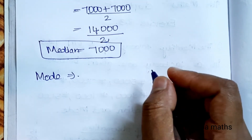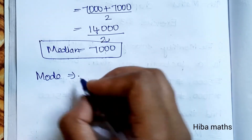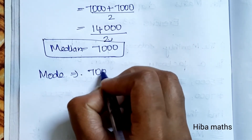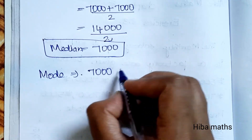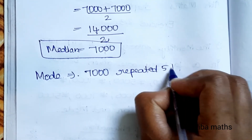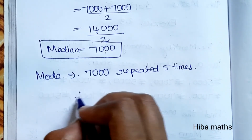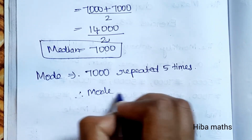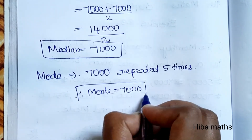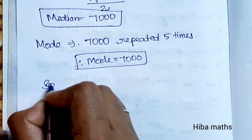Mode is equal to the most repeated number. The value 7,000 is repeated 5 times, so the mode value is 7,000.